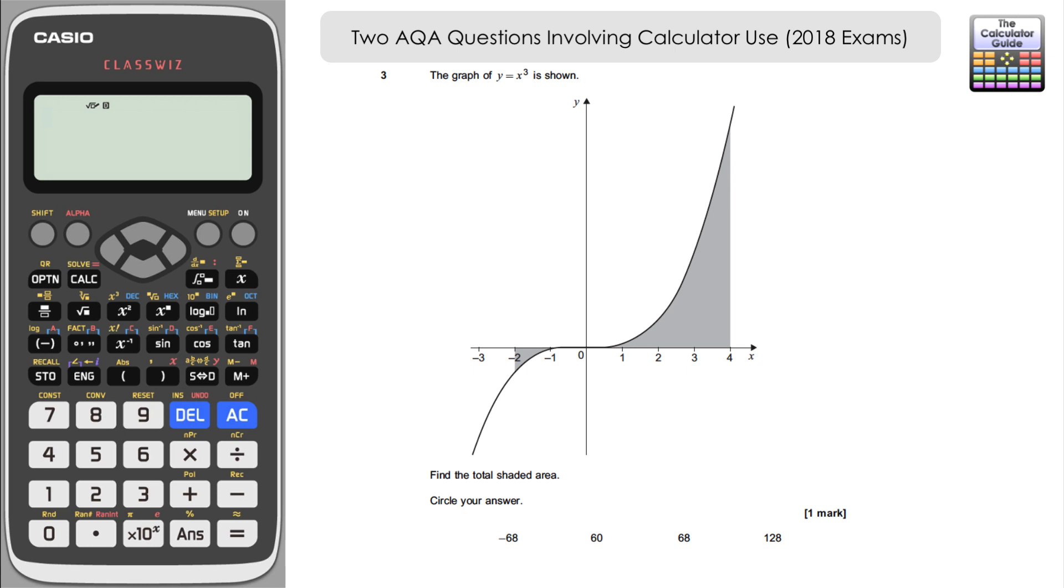This first question here is question three from paper two, again from June 2018. We've got the graph of y equals x cubed and we need to find the total shaded area and it's a multiple choice question. We've got four possible solutions that we can have here.